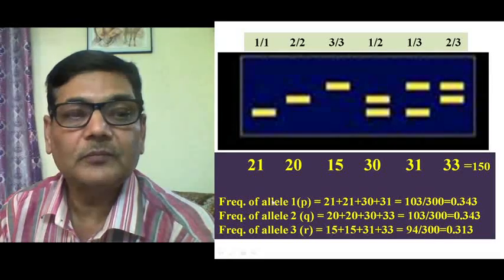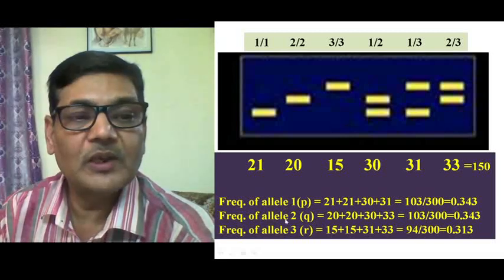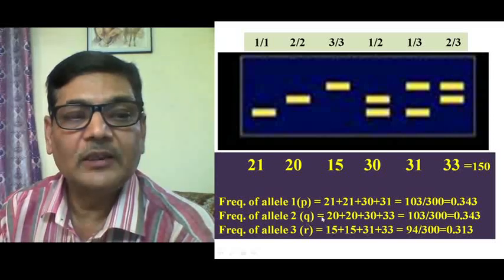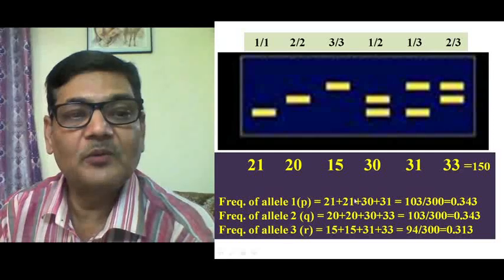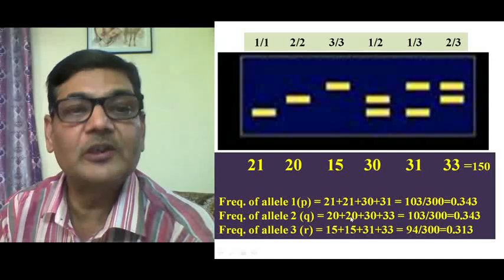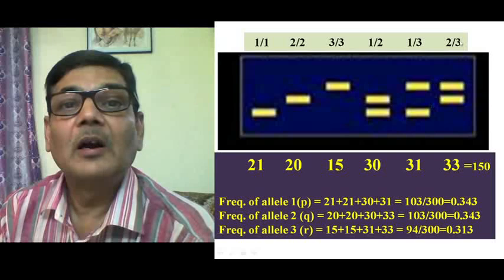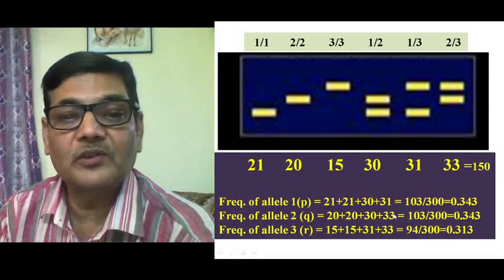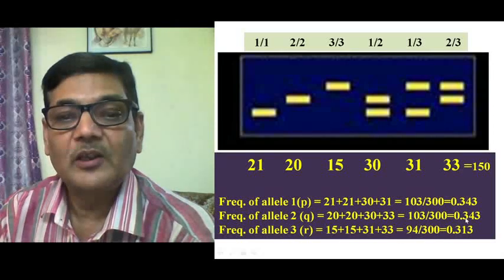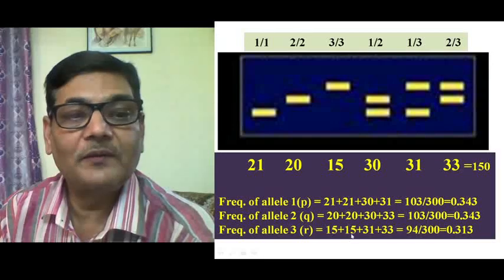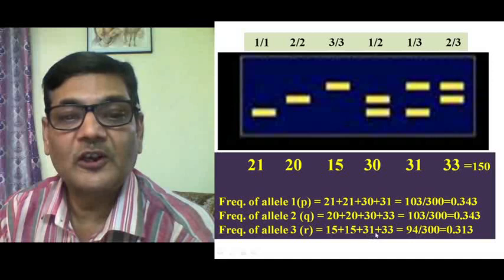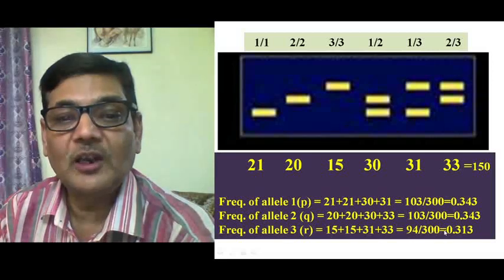For frequency of allele 2, expressed as Q: from the 20 homozygous 2/2 individuals we get 20 + 20 = 40, plus 30 from the 1/2 heterozygotes, plus 33 from the 2/3 heterozygotes. Total = 103, divided by 300 = 0.343. For frequency of allele 3, expressed as R: from 15 homozygous 3/3 individuals, 15 + 15 = 30, plus 31 from 1/3 heterozygotes, plus 33 from 2/3 heterozygotes. Total = 94, divided by 300 = 0.313.